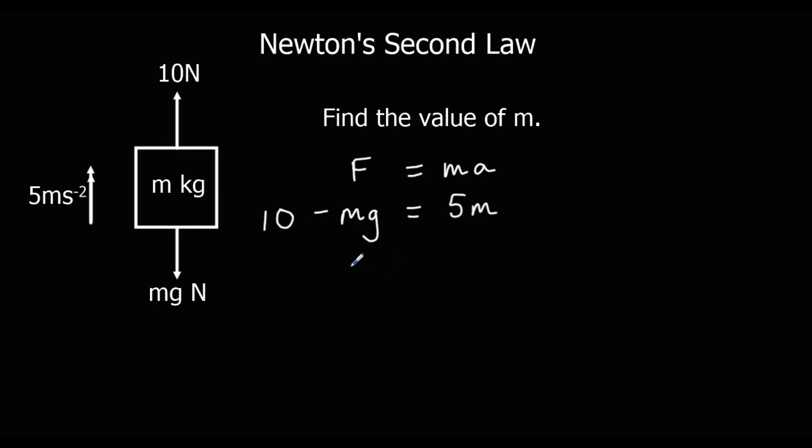If we add MG to both sides, that's 5M plus MG equals 10. We could substitute in G as 9.8, or leave our answer in terms of G. Either is fine. I'm going to leave my answer in terms of G. Factorizing out the M, we get M times (5 plus G) equals 10, so M equals 10 over (5 plus G).